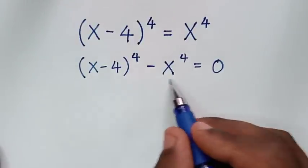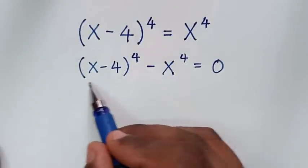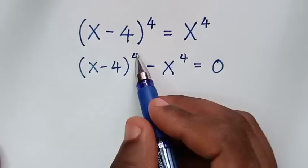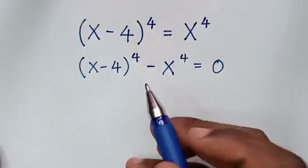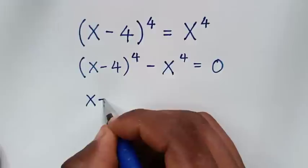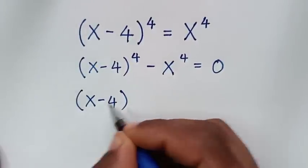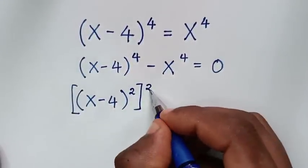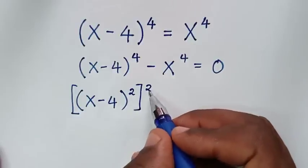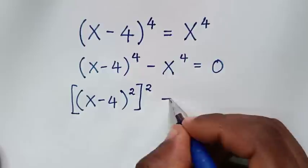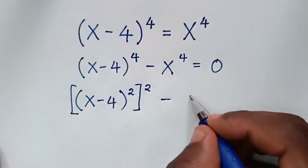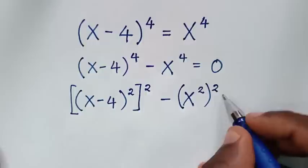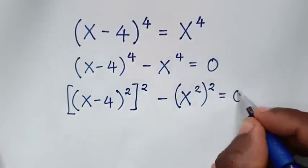From here, on the left side we will rewrite this in the form of a perfect square. Power of 4 is the same as power of 2 times power of 2. So it becomes (x minus 4)² all squared, minus (x²) all squared, equal to 0.